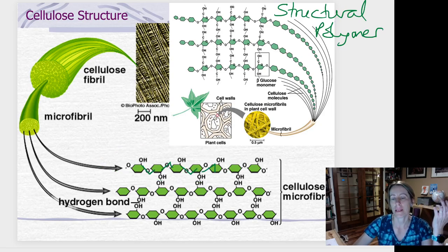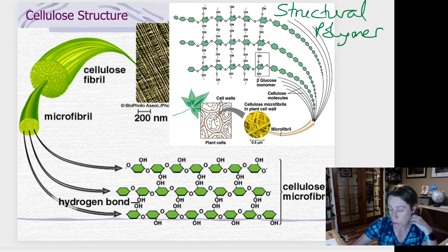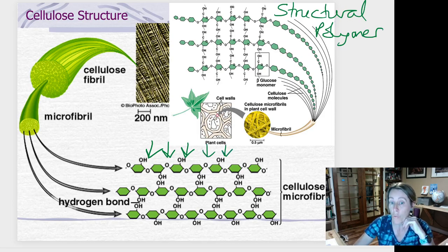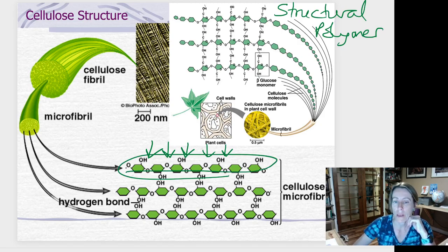So you know, that again might seem really minor, like why does that even matter? Well, in our bodies and in most mammals, in digestive systems, we cannot break these connections down. We can break down the ones where they're all holding hands facing down, but we can't break down the ones where they're flip-flop like this. So we cannot break this chain apart. So that has many, many implications.